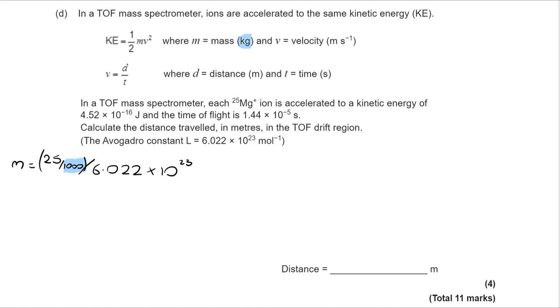Now what I can then do is rearrange to make v the subject. I've got v squared is 2KE over m and I'm making v root 2KE over m therefore. And that's because we need the velocity so we can use the distance velocity time equation to work out the distance and therefore the length of the tube.